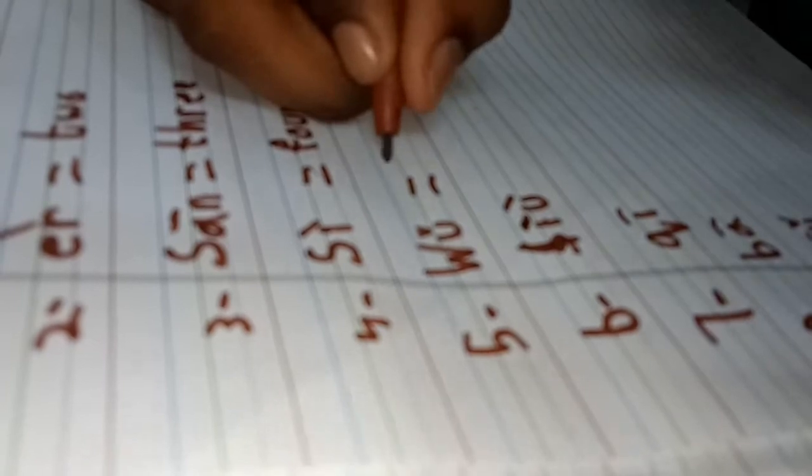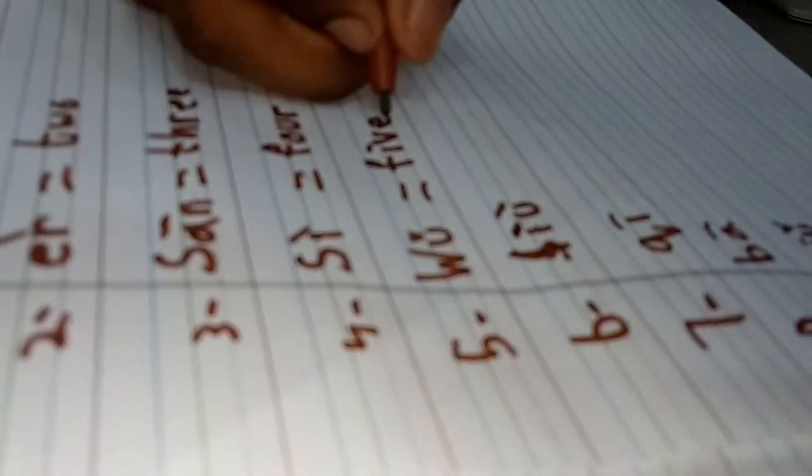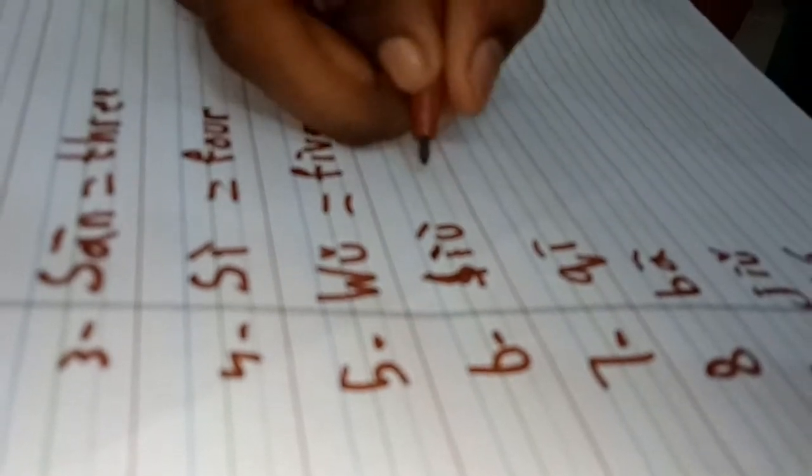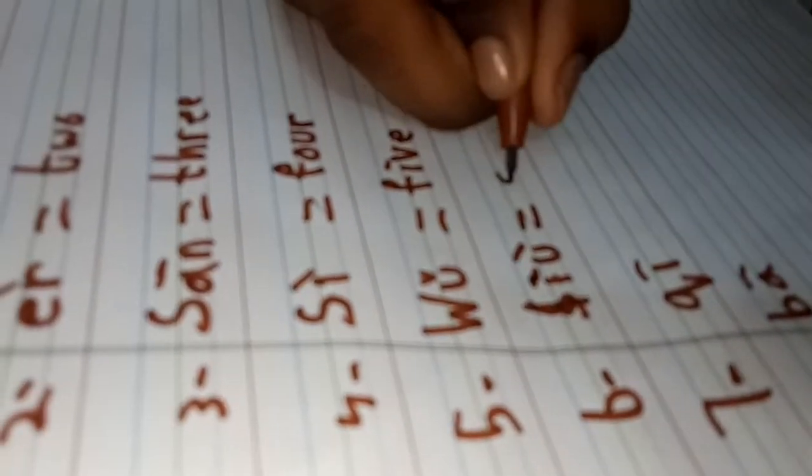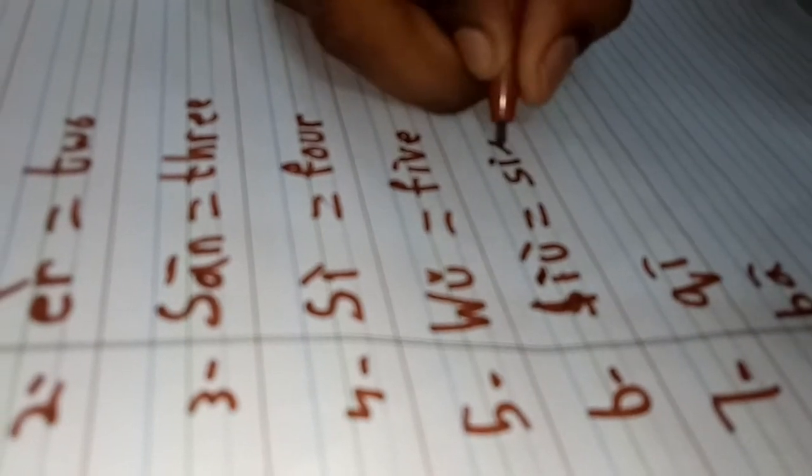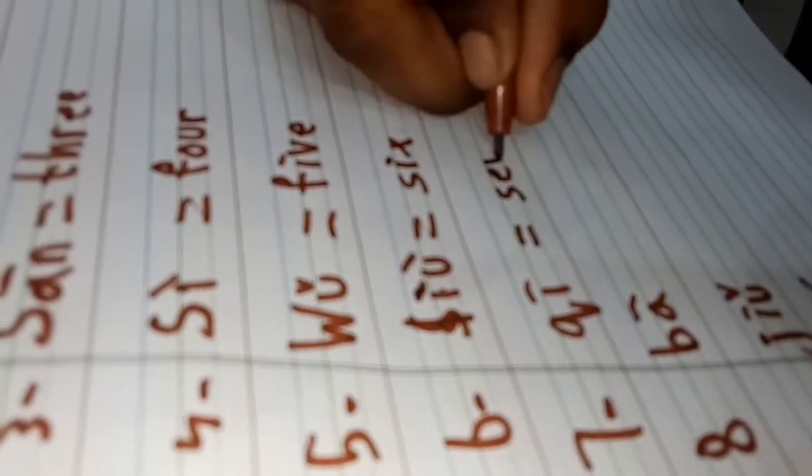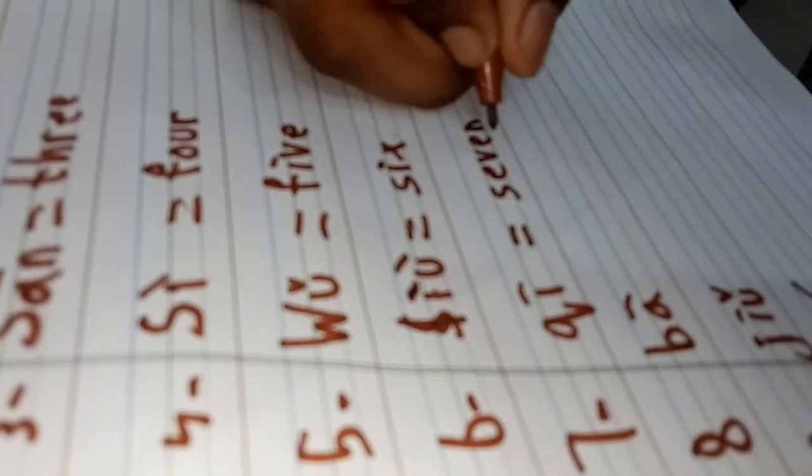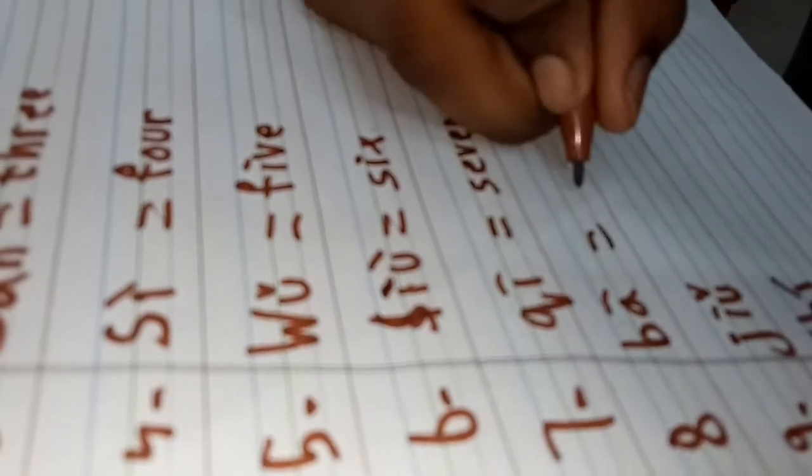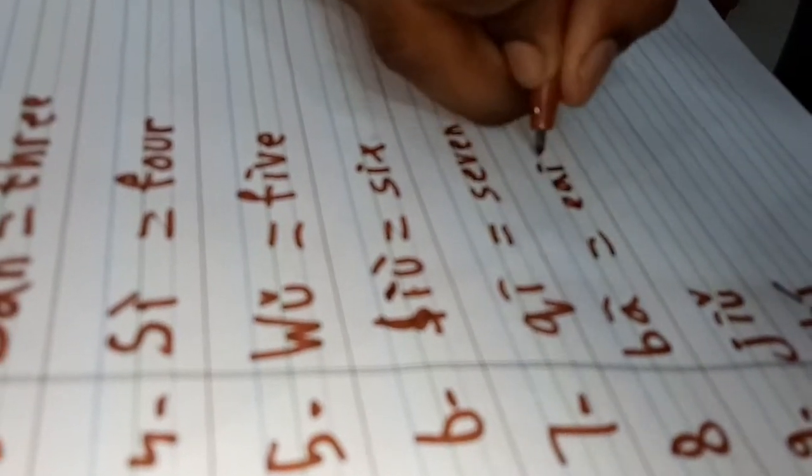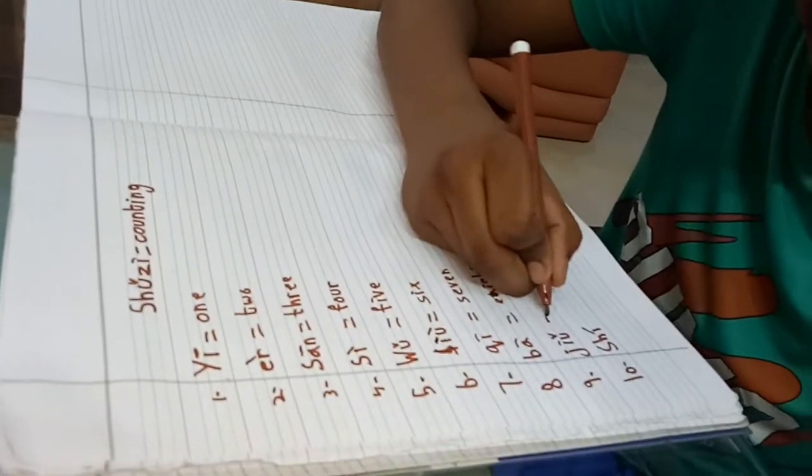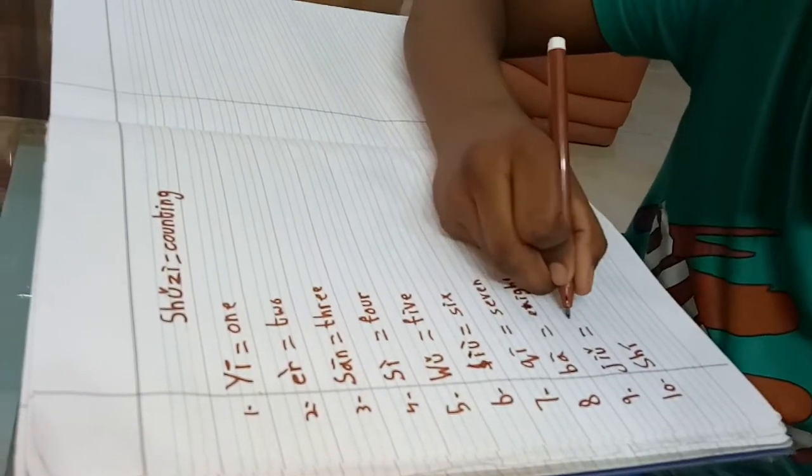Wu means five. Liu means six. Qi means seven. Ba means eight. Jiu means nine.